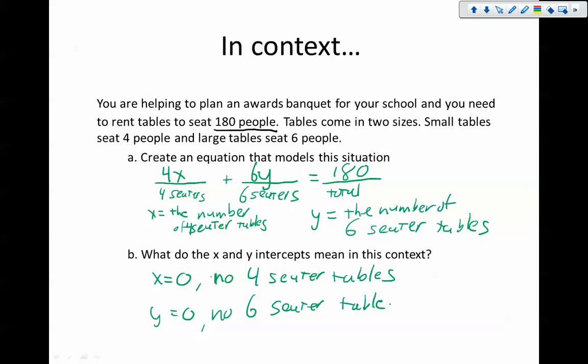And a Y equaling zero would mean I have no six-seater tables. So what do they mean in context? Well, it's the situation where I only go with four-seaters or six-seaters. Like I'm saying that there's zero of this type and this many of the other. The situation of the intercepts is that I'm only using one or the other.